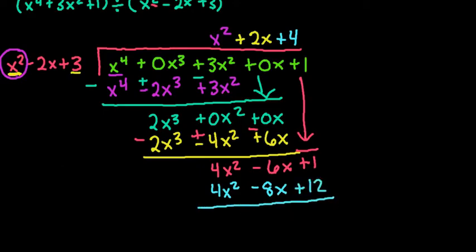And then we would change it to subtraction, or change the signs because we're subtracting all of these. So this would cancel out. Negative 6 plus 8 would give me positive 2x minus 11. And this right here would be your remainder.